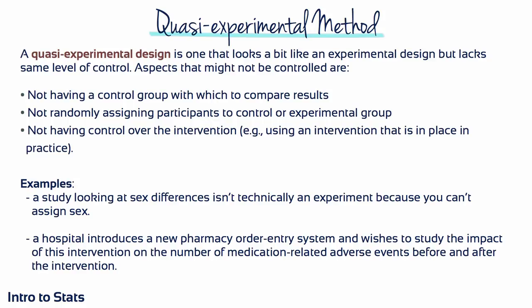If you're studying the relationship between sex and seasonal affective disorder, you can't randomly assign half of your participants to be male and half to be female. You could separate them into male and female groups based on their pre-existing sex, but you cannot manipulate that between-subjects variable. In another example, it would be unethical to assign people to groups receiving medication via the old or new system and then observe the number of medication-related adverse events — ethics restrict the researcher's level of control, making that study also non-experimental.